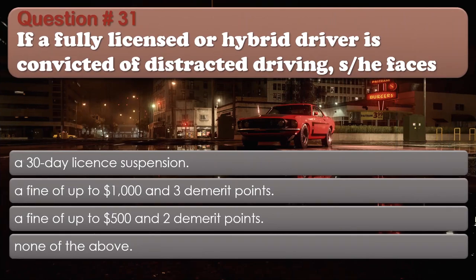Question number 31: If a fully licensed or hybrid driver is convicted of distracted driving, he faces: A 30-day license suspension. A fine of up to $1,000 and 3 demerit points. A fine of up to $500 and 2 demerit points. None of the above. The correct answer is A fine of up to $1,000 and 3 demerit points.